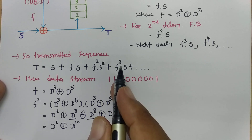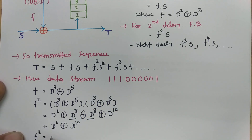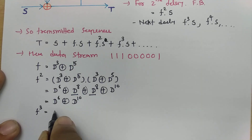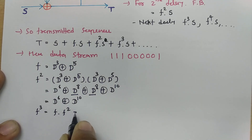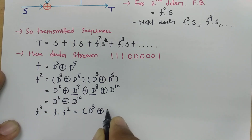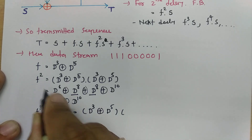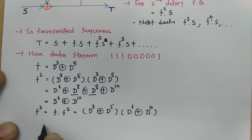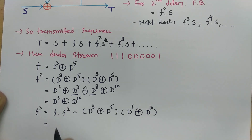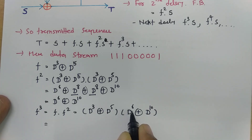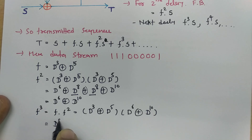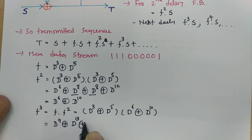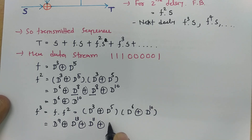Now let us calculate f³, which is f² into f. So f is d³ mod-2 sum d⁵, and f² is d⁶ mod-2 sum d¹⁰. If you resolve this, you will find: d³ into d⁶ = d⁹, plus d³ into d¹⁰ = d¹³, plus d⁵ into d⁶ = d¹¹, plus d⁵ into d¹⁰ = d¹⁵. So f³ = d⁹ + d¹¹ + d¹³ + d¹⁵.